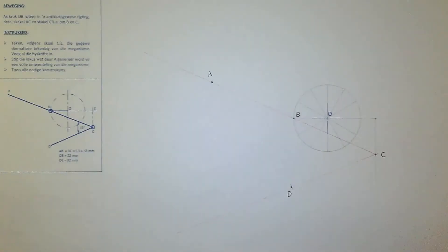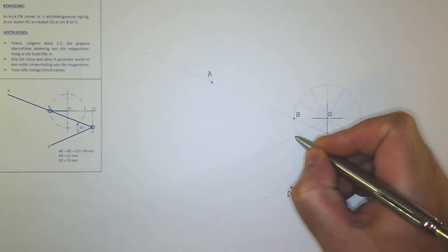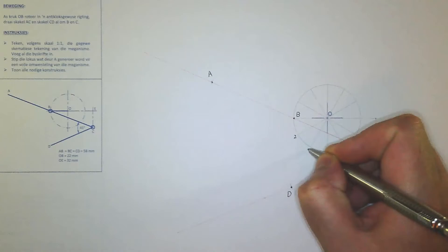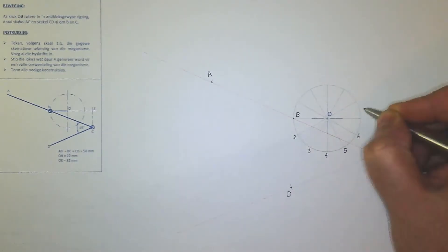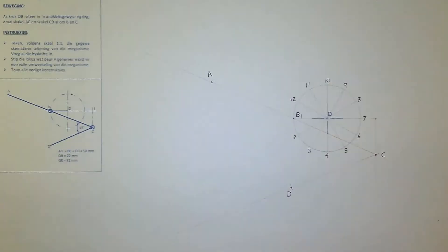All right, so they're telling us that the point B is going to rotate anti-clockwise around, so I'm just going to take the liberty, so this will be B2, B3, B4, and so on. Now, the only reason why you actually need point D for this exercise is so that you know you can use that as the pivot point for your compass.